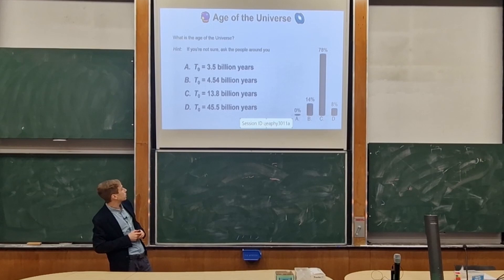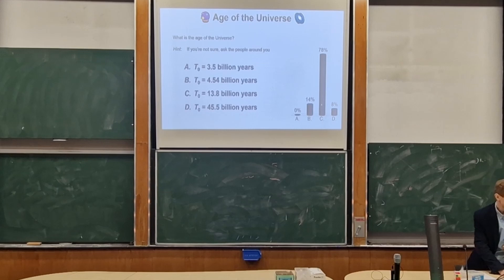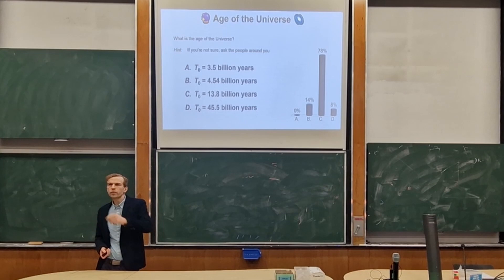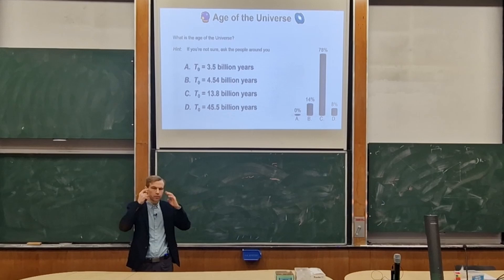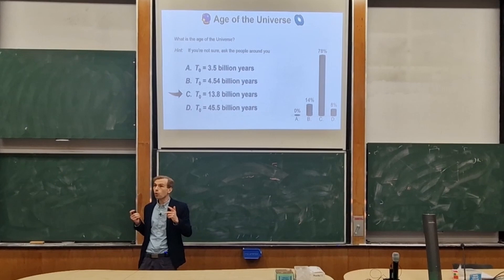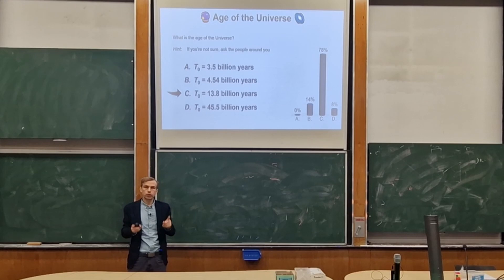People are mainly thinking B and C — they're both in the billions of years. Option B is the age of the Earth, roughly the age of the solar system or the sun. I can see why you might think that. But the correct answer is C. So very well done if you got that — especially if you got 13.8 billion years. That's the age of the universe.